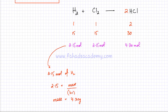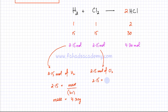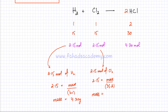Similarly, we can find the mass of Cl₂. We have 2.15 moles of Cl₂. Using moles equals mass over Mr: the Mr of Cl₂ is 35.5 × 2 = 71. So mass equals 2.15 × 71, which gives 152.65 grams. That is the mass of chlorine needed in this reaction.